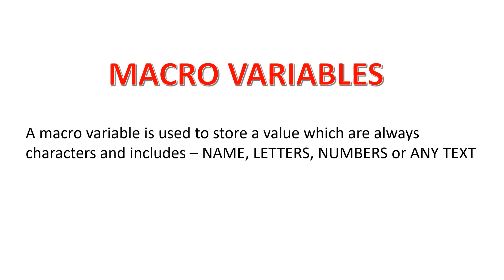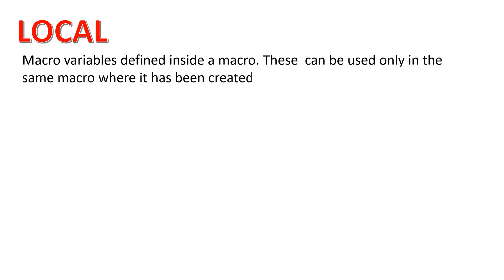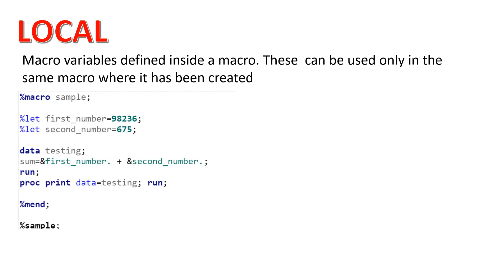There are two types of macro variables: local and global. Local macro variables are defined inside a macro and can only be used within the same macro where they were created. The macro variables created inside one macro are called local macro variables and are scoped to that macro.